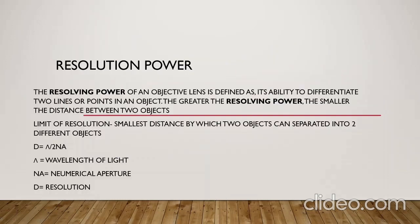The next is resolution power. Resolution power of an objective lens is defined as its ability to differentiate two lines or points in an object. The greater the resolving power, the smaller the distance between two objects. Resolving power means the ability of the microscope to differentiate two objects that are close together. Limit of resolution is the smallest distance by which two objects can be separated into two different objects.